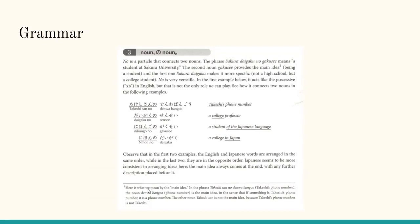Note three: Here is what we mean by the main idea. In the phrase Takeshi-san no denwa bangou, Takeshi's phone number, the noun denwa bangou, which means phone number, is the main idea, in the sense that if something is Takeshi's phone number, it is a phone number. The other noun, Takeshi-san, is not the main idea, because Takeshi's phone number is not Takeshi.